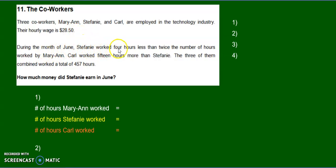During the month of June, Stephanie worked four hours less than twice the number of hours worked by Marianne. Carl worked 15 hours more than Stephanie. The three of them combined worked a total of 457 hours.